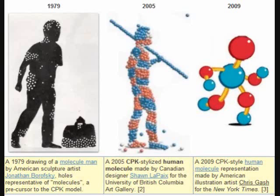The first diagram to the left is the 1979 drawing of a molecule man by American sculpture artist Jonathan Borofsky, where the holes represent molecules of a person. Borofsky says he was led into this viewpoint by his fascination — in his own words — with this molecule idea, the simple fact that even though we appear to be quite solid, we are in fact composed of a molecular structure which is itself mostly composed of water and air.